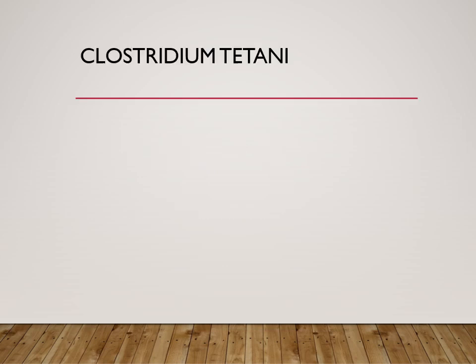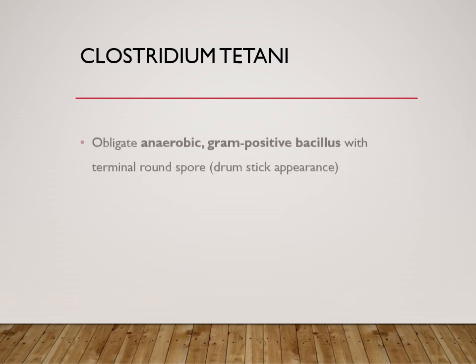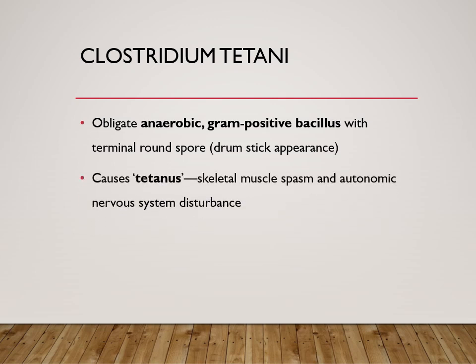So what is tetanus? Tetanus is basically caused by gram-positive anaerobic bacteria called Clostridium tetani. These bacteria usually have spores, and these spores are placed at the end, giving an appearance of a drumstick — that is the terminal round spore. It causes the disease tetanus, where there is involvement of skeletal muscles and they go into spasm.